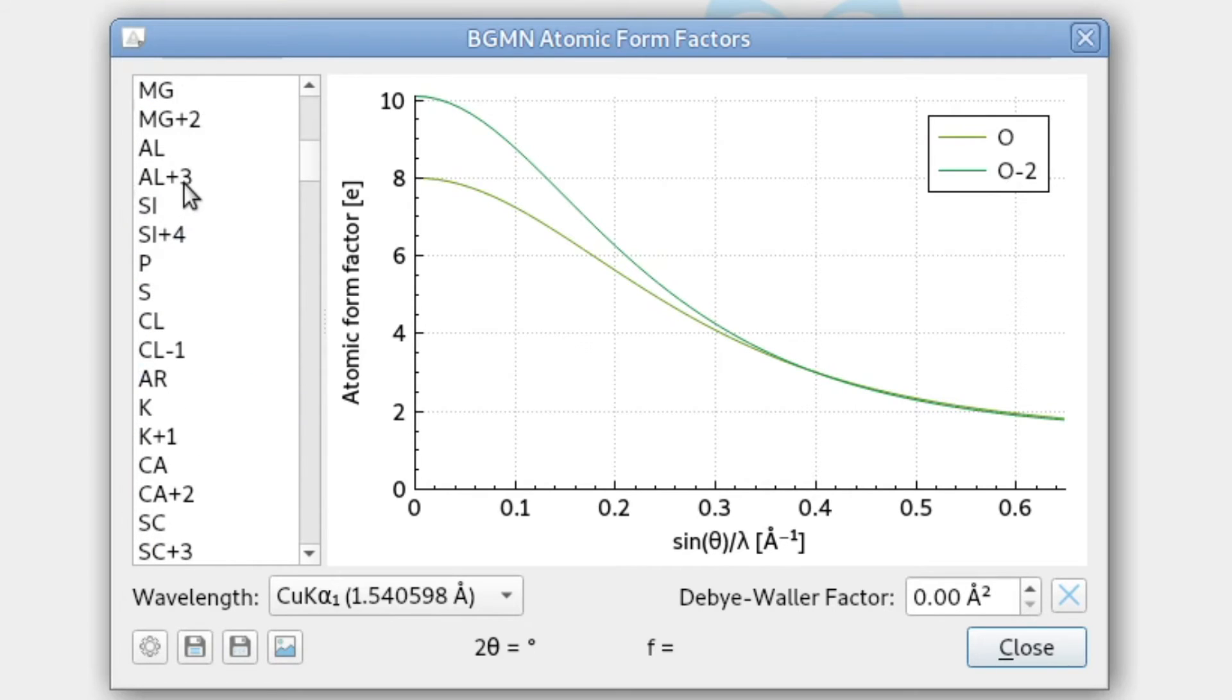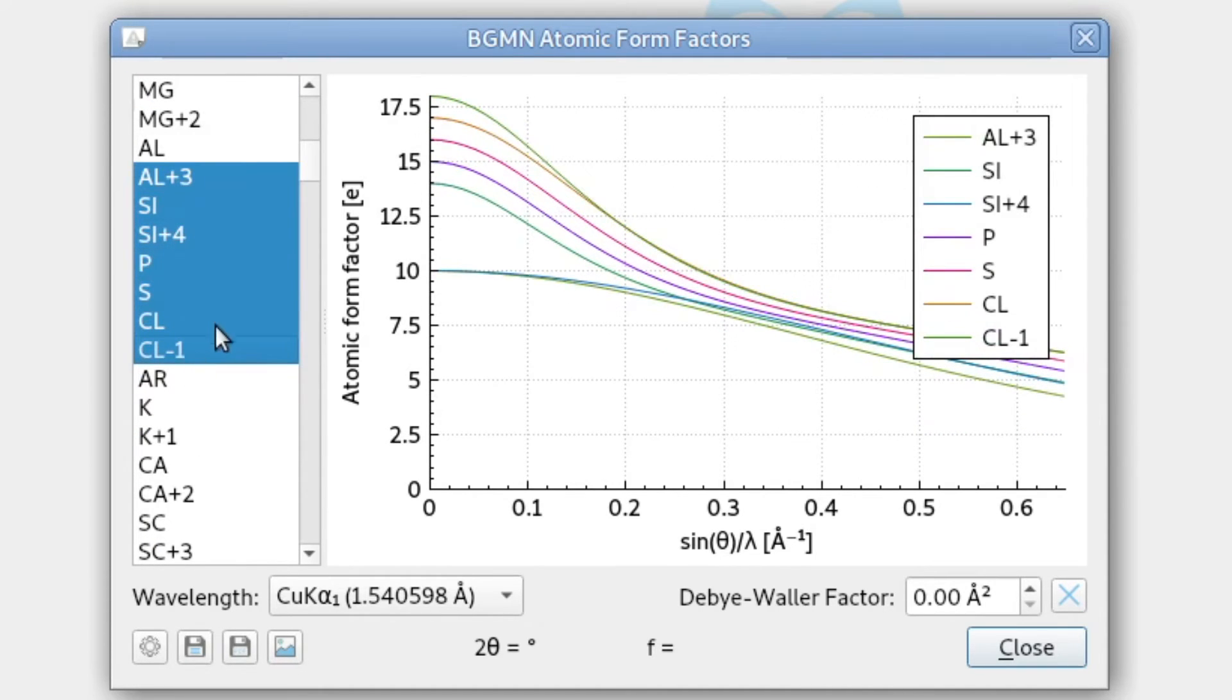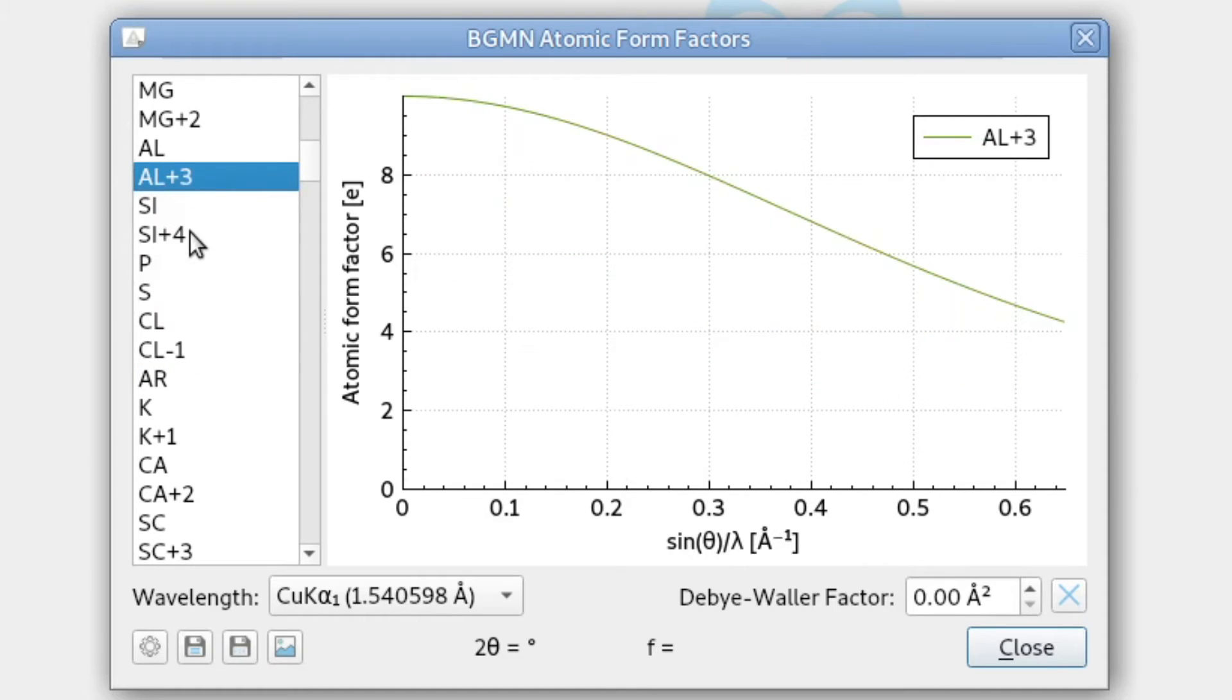Now we can select many ions and compare, for example, aluminum with silicon. Now this is the opposite, they start at the same scattering power because they contain the same number of electrons, but towards higher angles we see a tiny difference in the scattering power.